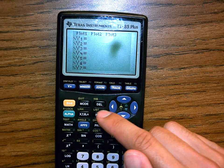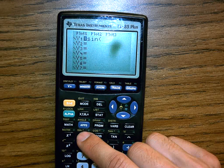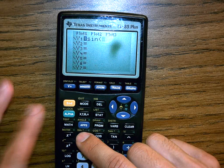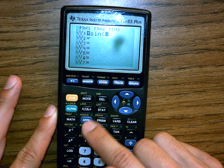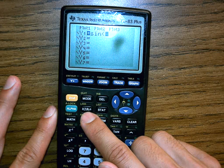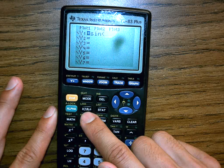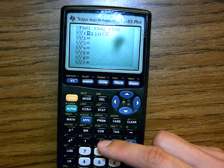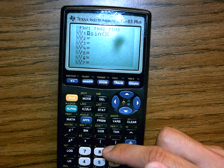I'm going to press the sine button. Y equals sine of, what do I want? X. This button right here, right next to the alpha, is my basic variable, whether I'm using X or T or theta or N. I'm just going to press it. It will automatically know to use X because I have function already selected.